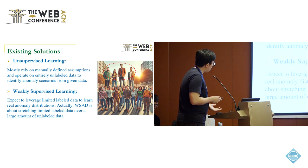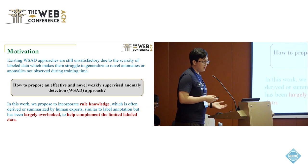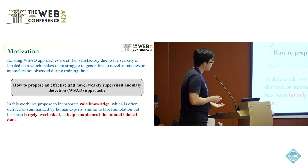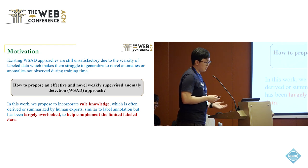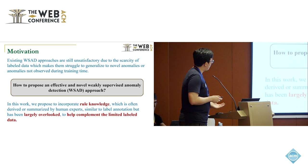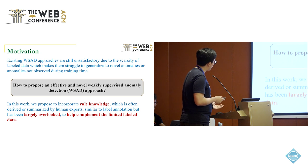WSAD is about stretching limited labeled data over a large amount of unlabeled data. After reviewing existing solutions, we note that existing WSAD approaches are still unsatisfactory due to the scarcity of labeled data, which makes them struggle to generalize to novel anomalies or anomalies not observed during training. So, how to propose an effective and novel weakly supervised anomaly detection approach? In this work, we propose to incorporate rule knowledge, which is often derived or summarized by human experts, similar to label annotation but has been largely overlooked, to help complement the limited labeled data.